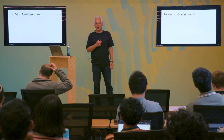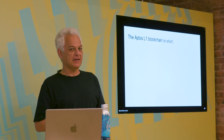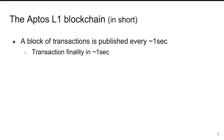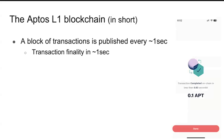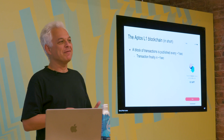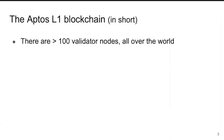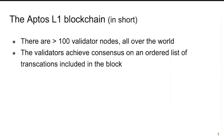Before describing the protocol, I'll give an introduction about the Aptos blockchain. Aptos is a layer-one blockchain that publishes a block of transactions every about one second, and you get transaction finality in less than a second. This is the Aptos Petra wallet - I transferred some tokens and it was finished in 0.93 seconds. So this is the amount of latency you have on the network, and everything we do has to be fast enough to work within this latency.